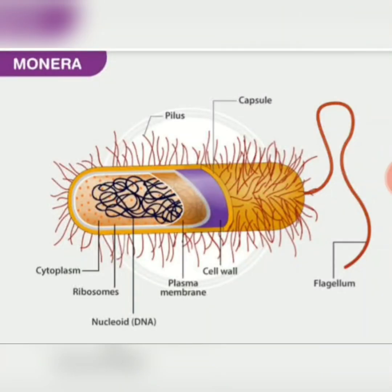Members of Kingdom Monera do not have any true nuclear membrane; moreover, they are prokaryotic in nature.